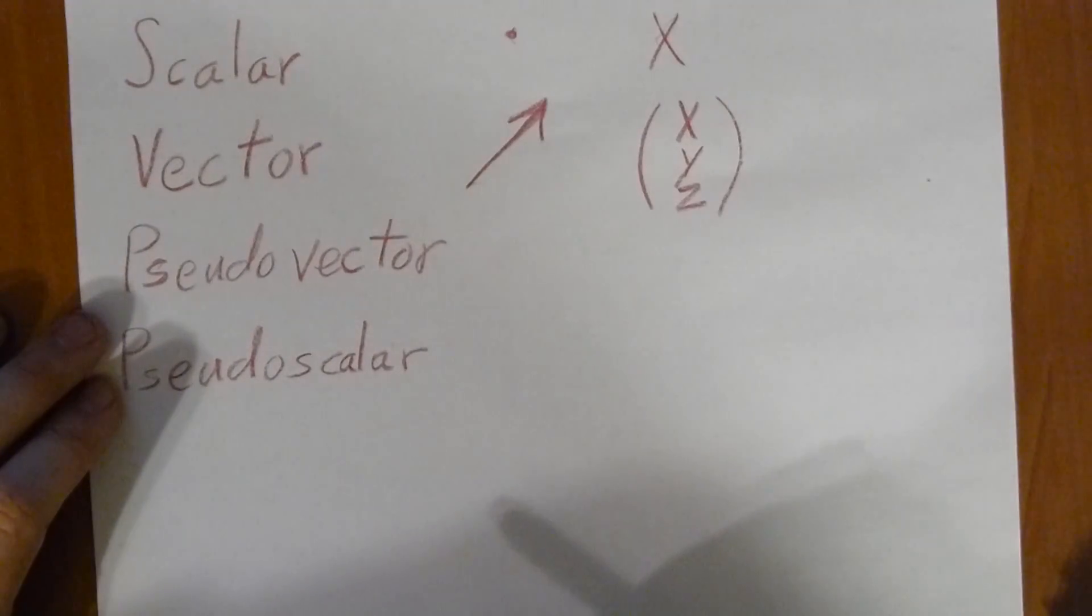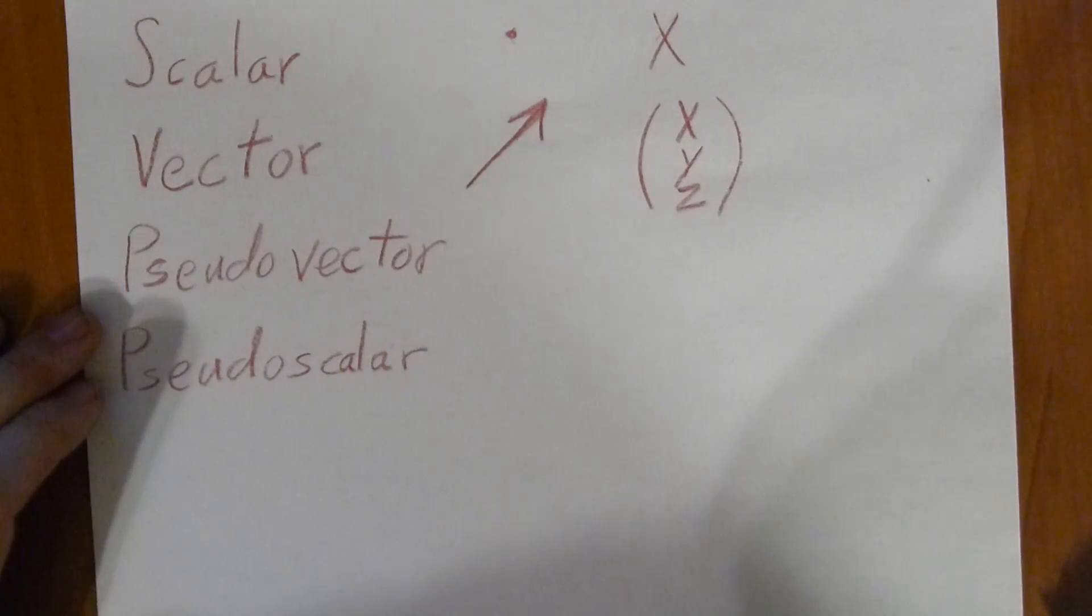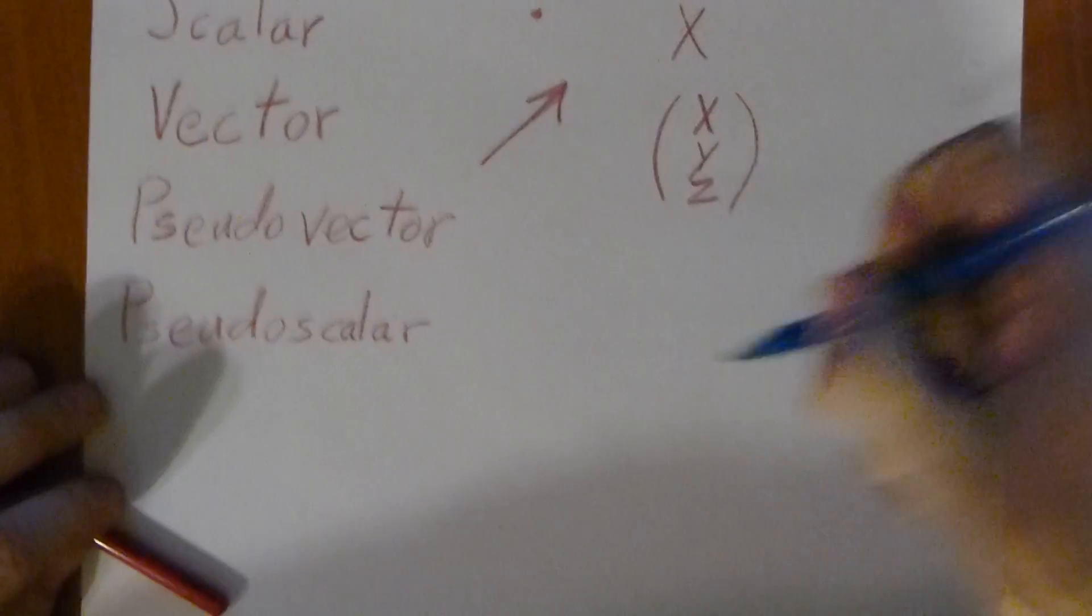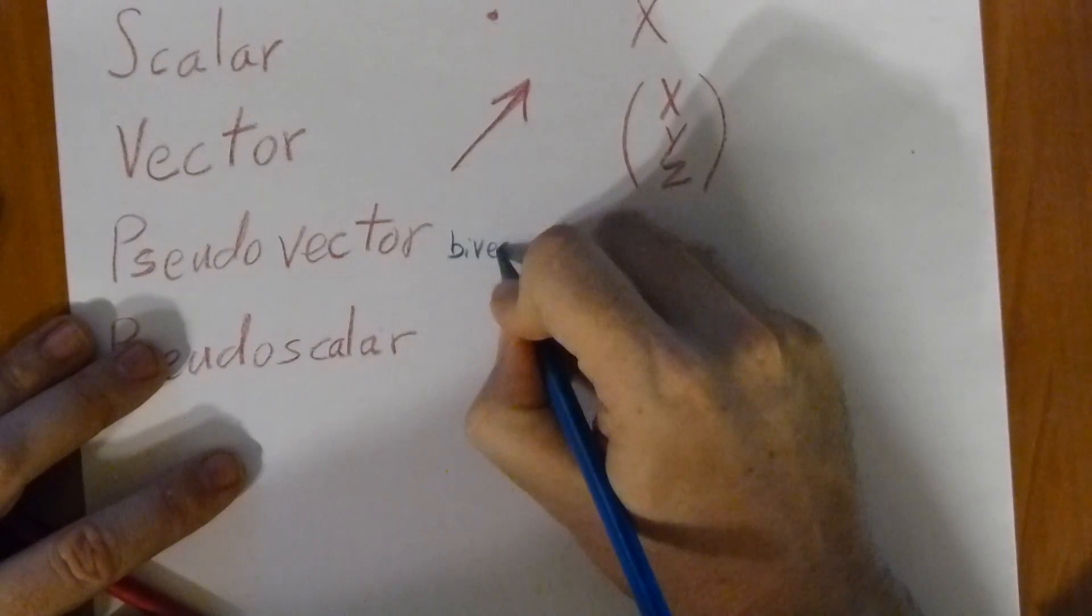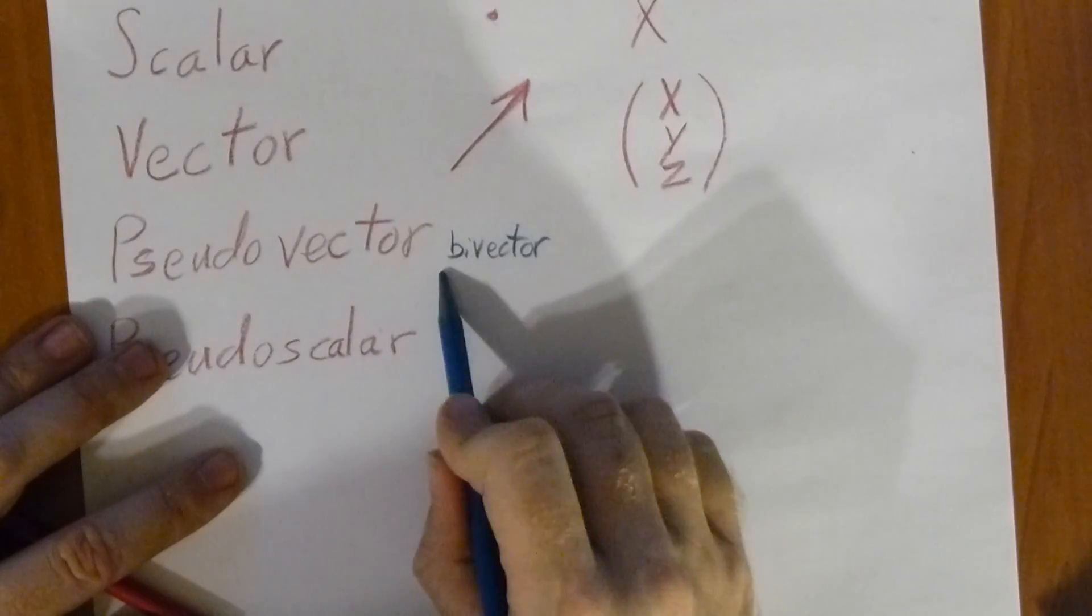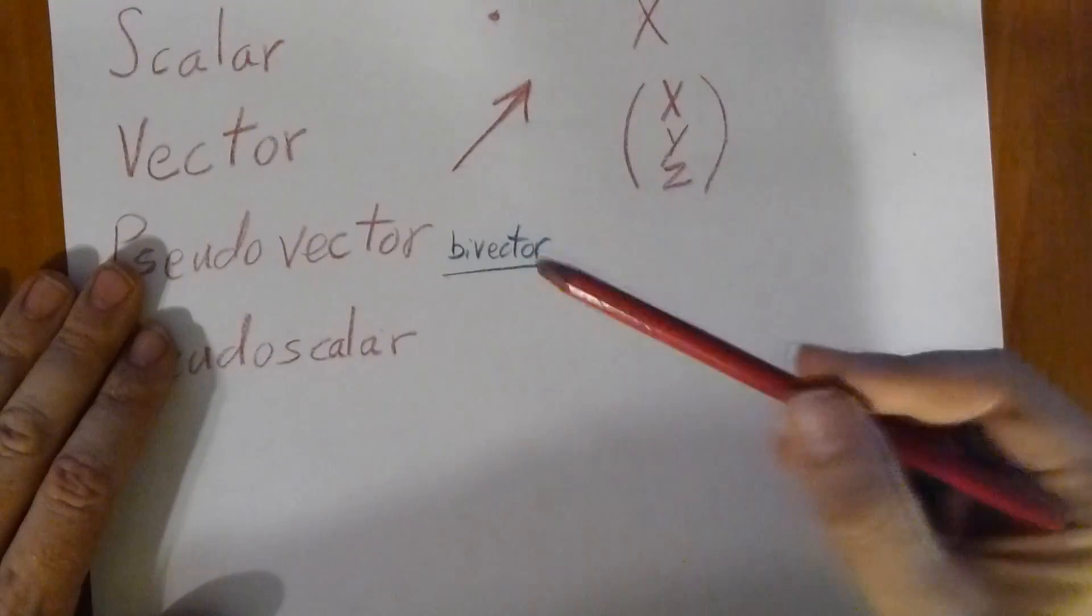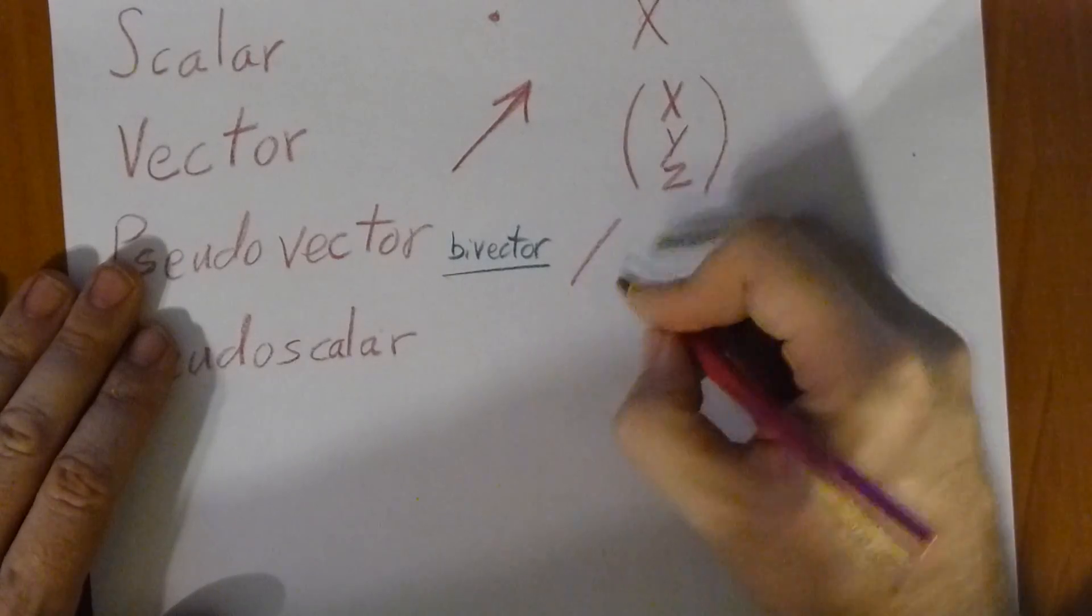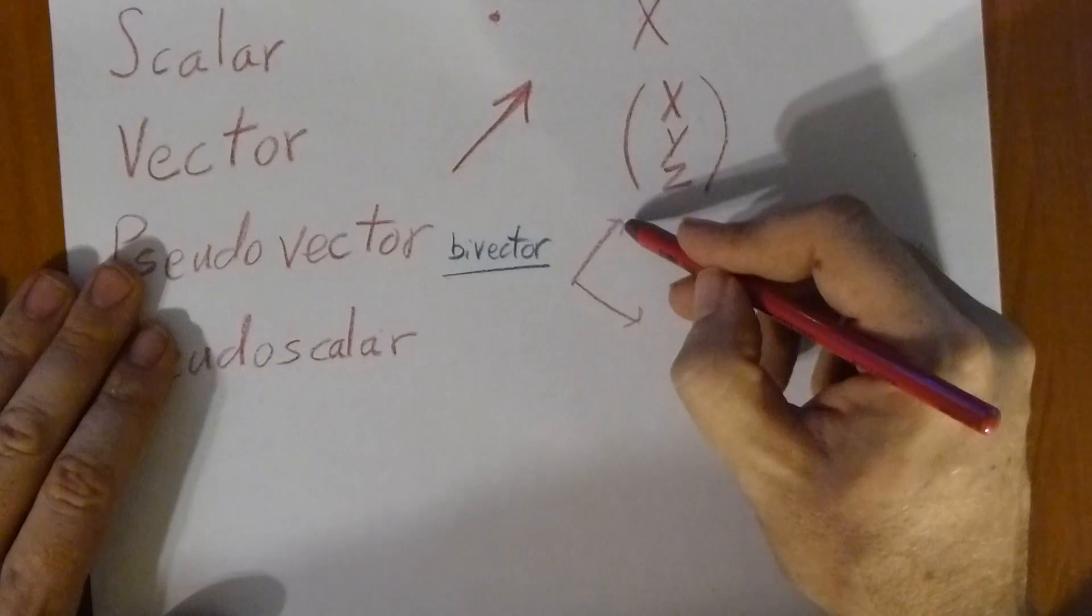But we have something that masquerades as a vector but it is not. It's called the pseudovector, or a better term would be a bivector. Instead of being an arrow, it's mathematically better represented as two arrows, right?